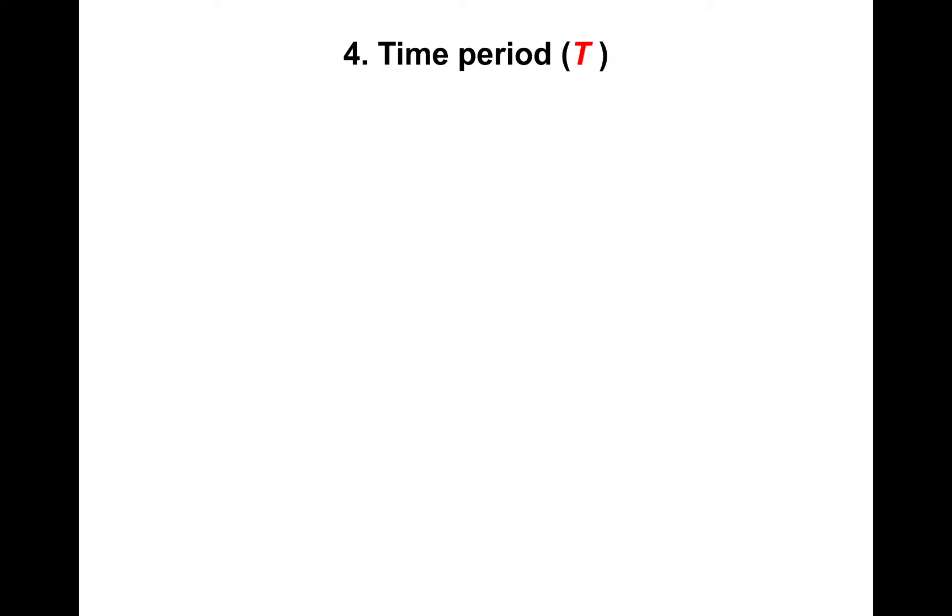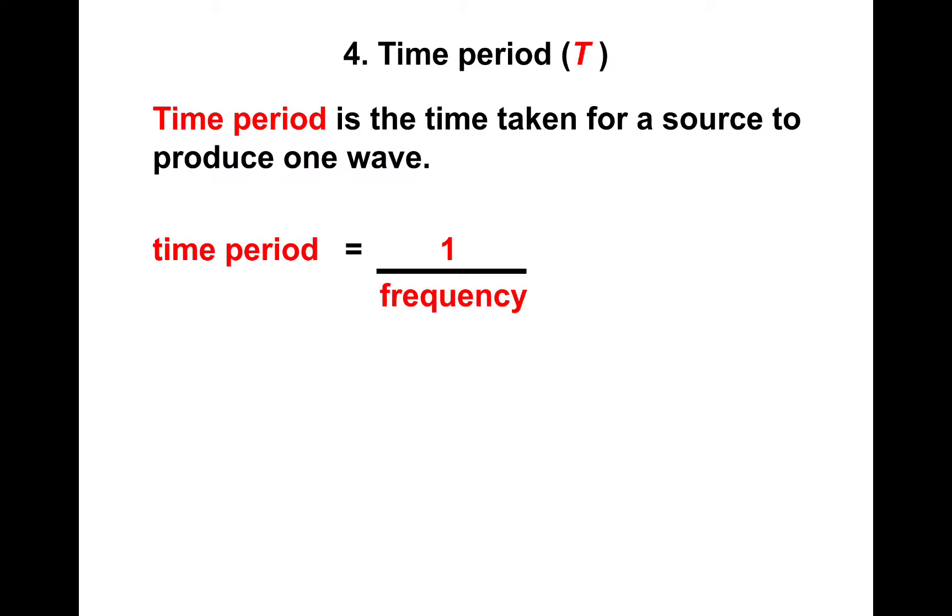So the next thing is time period. Time period is the time taken for a source to produce one wave. And there's an equation for this one and it's time period equals one divided by the frequency, or capital T for time period equals one divided by F.